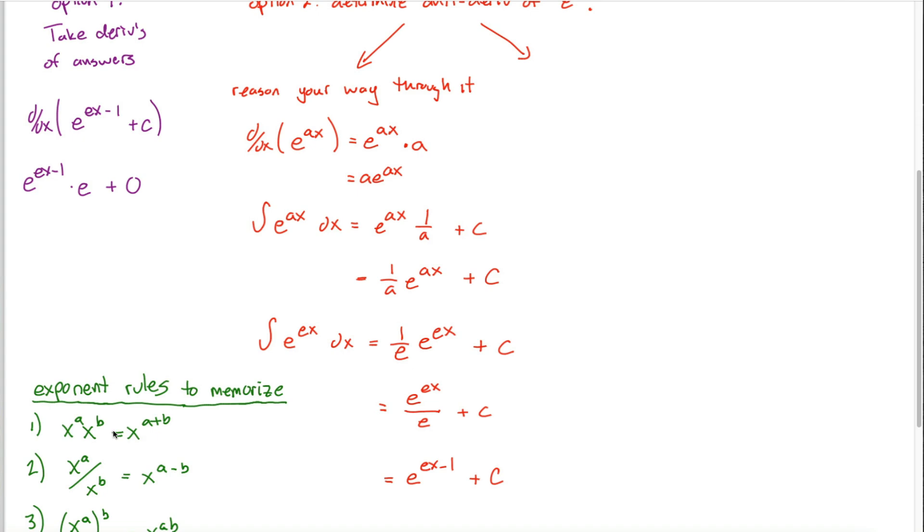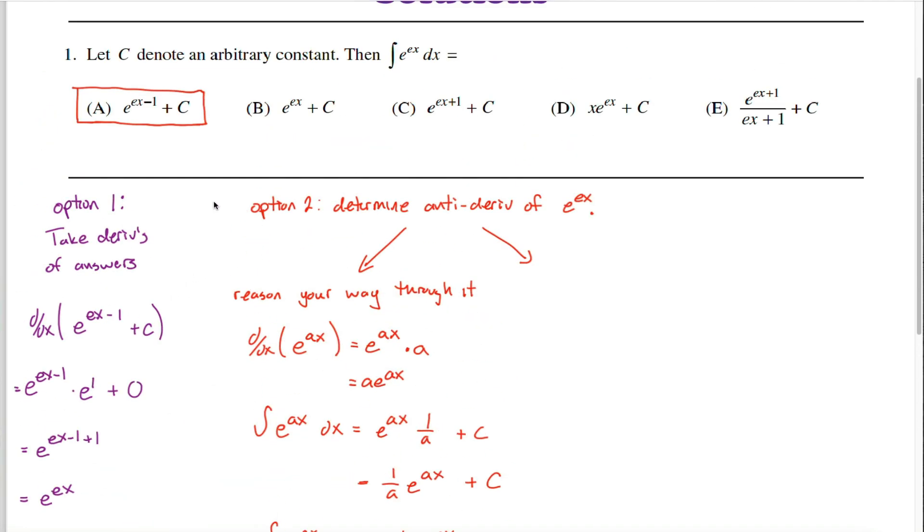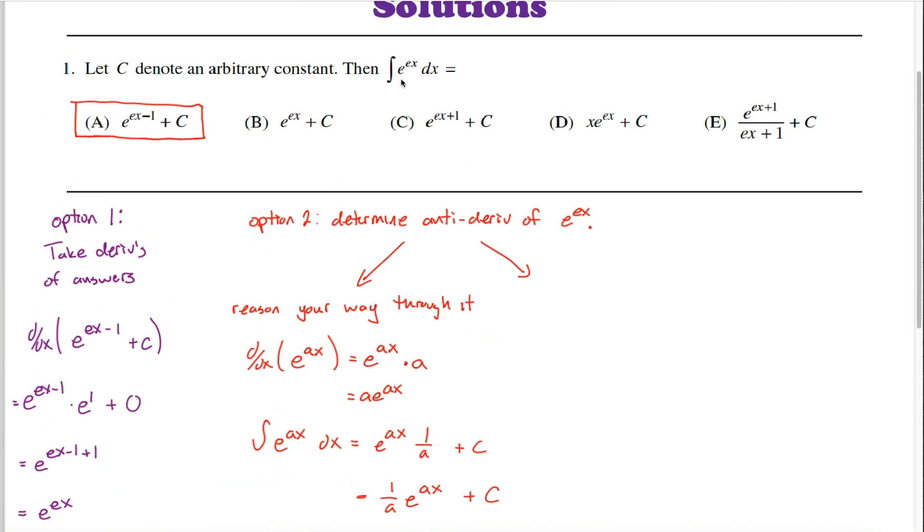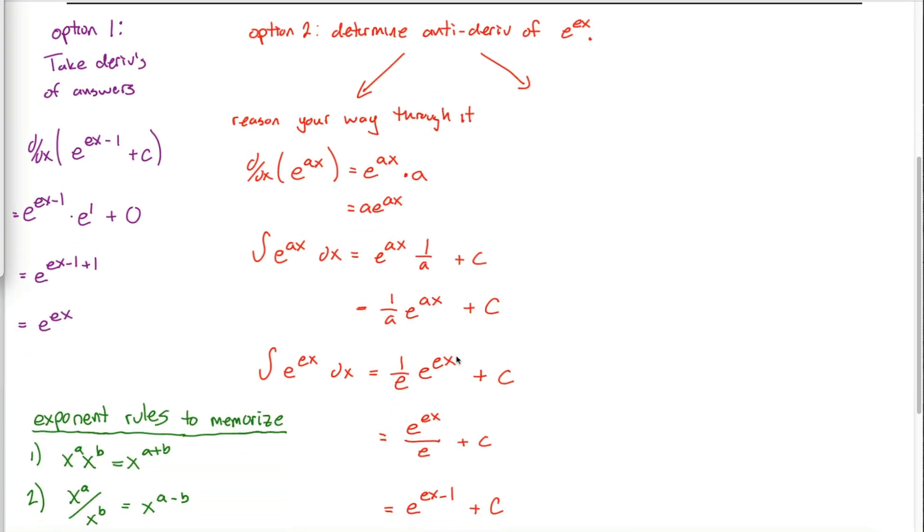I got e to the ex minus 1 times e to the first power. If you're using the first of these exponent rules, you add together those exponents to get e raised to the ex minus 1 plus 1 power. Negative 1, positive 1 cancels out. We're left with just e to the ex power. The fact that the derivative of this answer is this integrand means that this is the antiderivative of this.